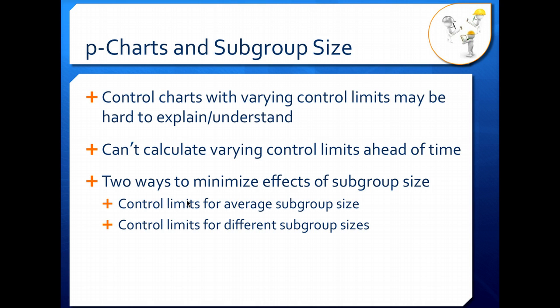Unfortunately, you can't calculate the varying limits ahead of time. You need to do it as each data point is collected. That's another disadvantage with unequal subgroup sizes.